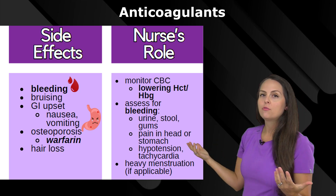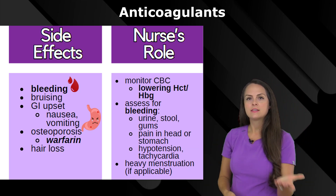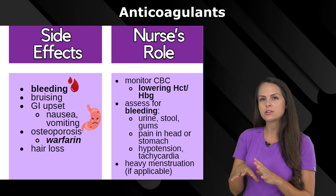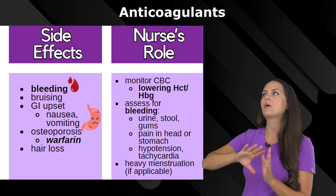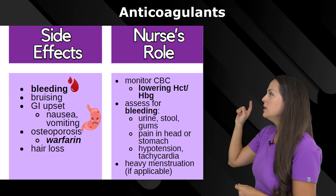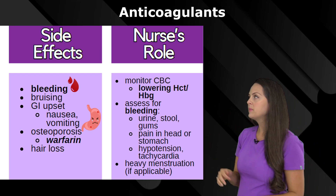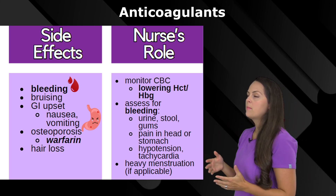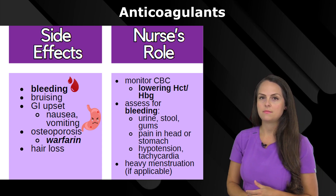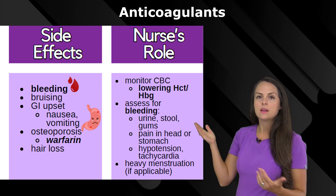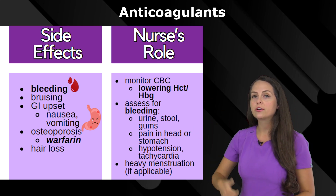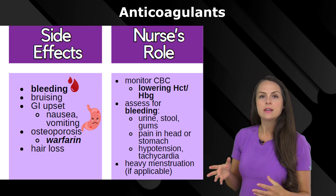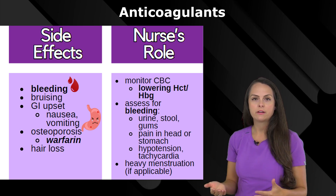Assess your patient directly for bleeding. Check the urine — a light pink color may indicate mild bleeding, while frank red urine indicates severe bleeding. Check if stool is dark and sticky, look at the gums for any oozing, and assess for pain in the head or stomach, which could indicate internal bleeding. Monitor vital signs — decreasing blood pressure with increasing heart rate is a major sign of bleeding. Also assess if menstruating patients are having heavy periods.